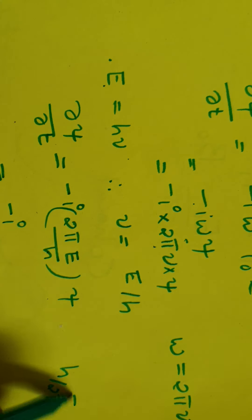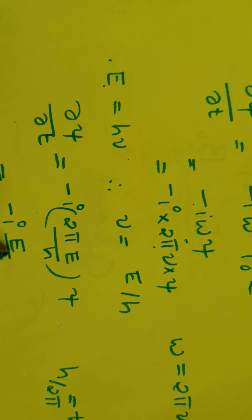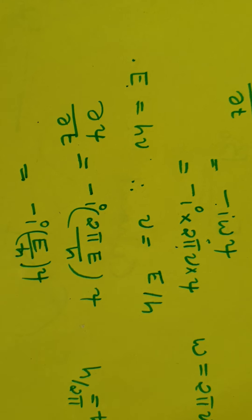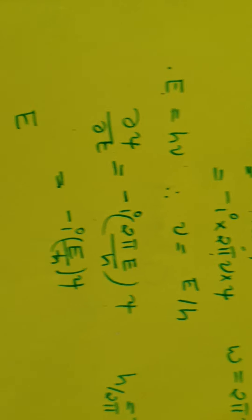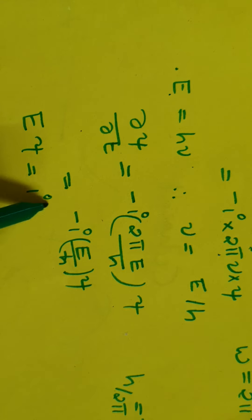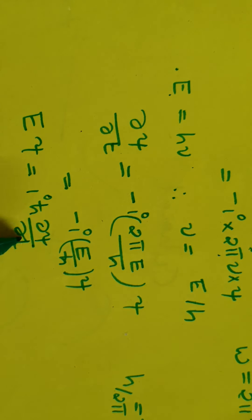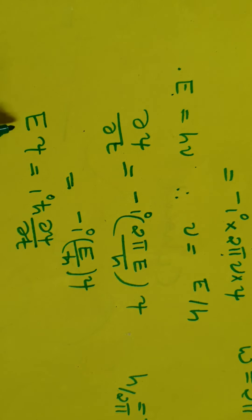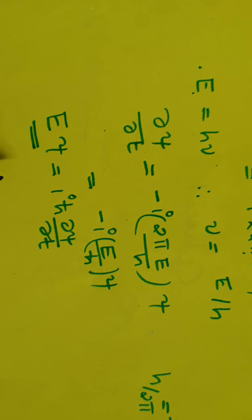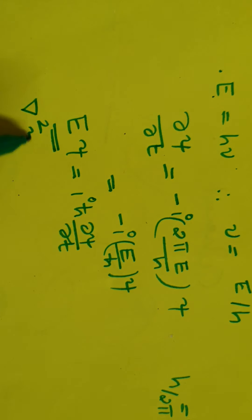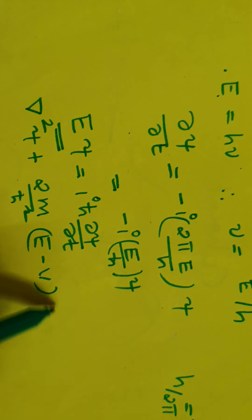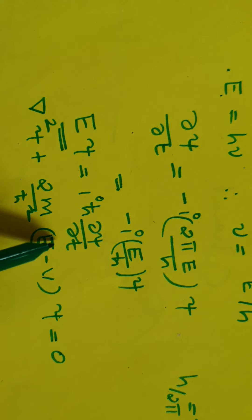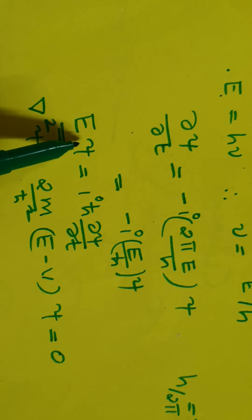We can write Eψ = ih̄(∂ψ/∂t), where h̄ = h/2π. The time-independent Schrödinger equation is ∇²ψ + (2m/h̄²)(E − V)ψ = 0. Putting the value of Eψ from this relation into that equation.